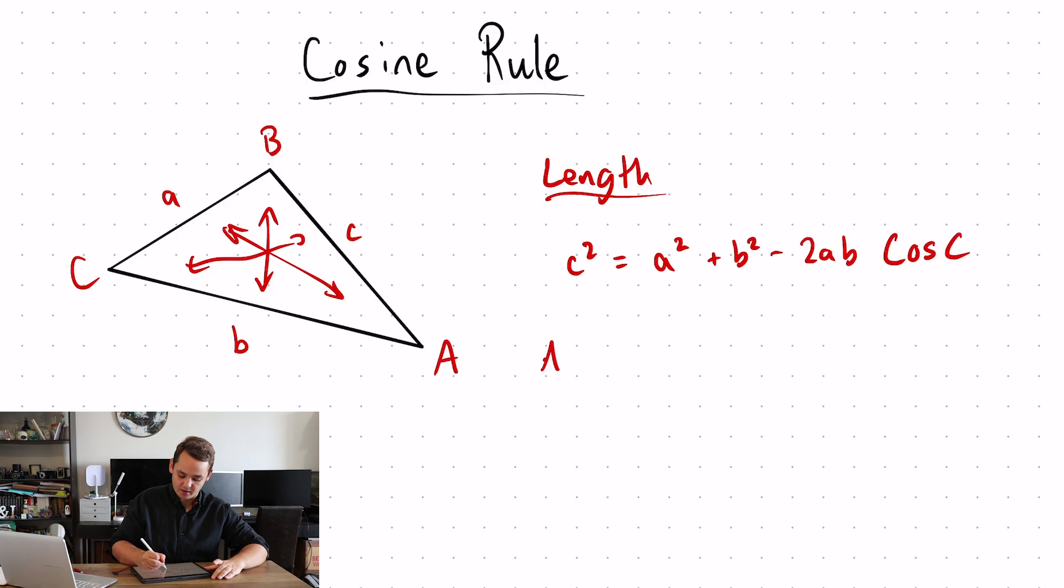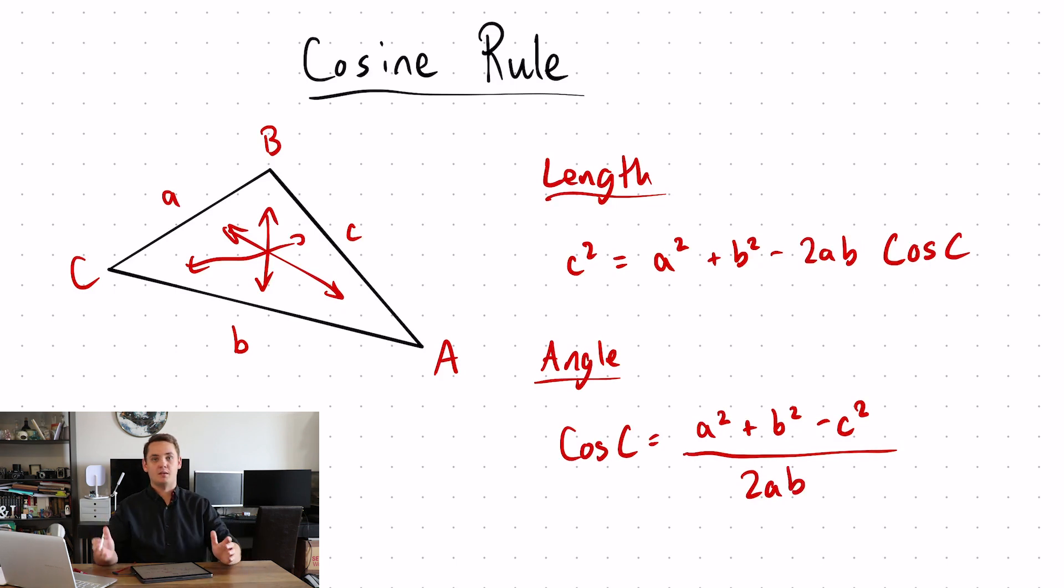And one for the angle which is cos C is equal to A squared plus B squared minus C squared all over 2AB. They are both the same formula, just a slight rearrangement of one another.